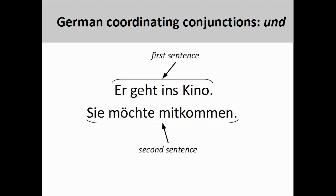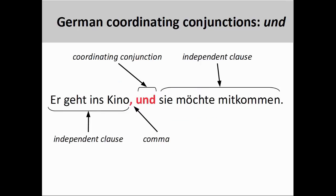We can also use 'und' to join two sentences as a means of providing additional information. For example, the second sentence, 'Sie möchte mitkommen' — 'She would like to come with' — provides additional information to the activity described in the first sentence, 'Er geht ins Kino' — 'He is going to the movies.' When 'und' is used to join these sentences, the connection between the ideas they express is made even more explicit. It is important to note that, as in English, the resulting sentence manifests two independent clauses, which are separated by a comma preceding the coordinating conjunction.